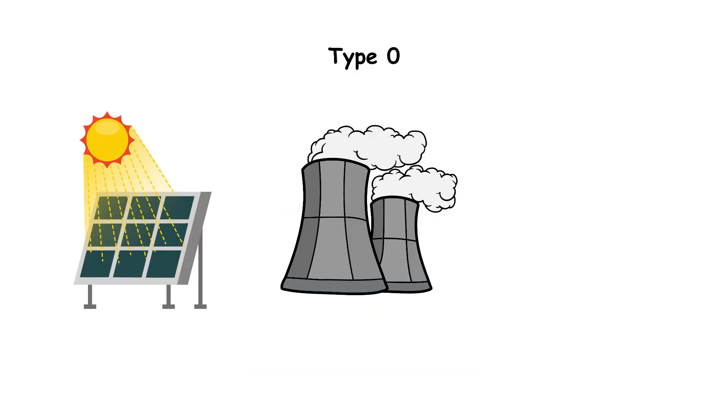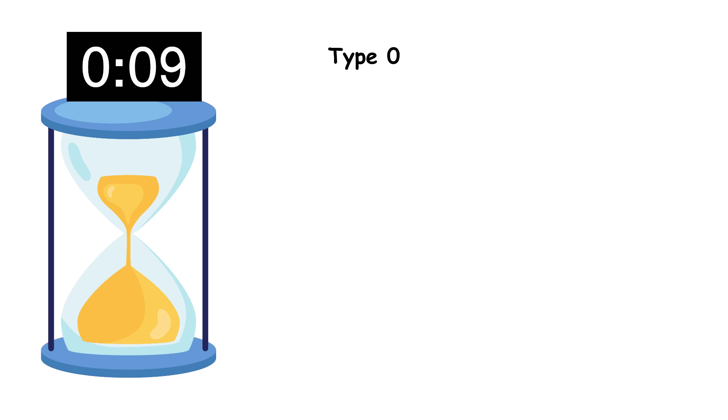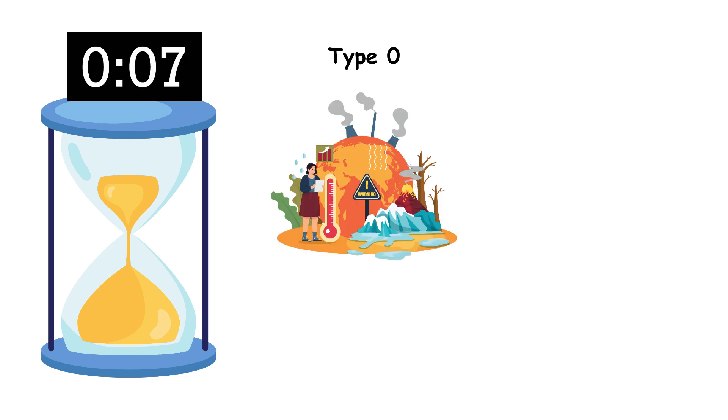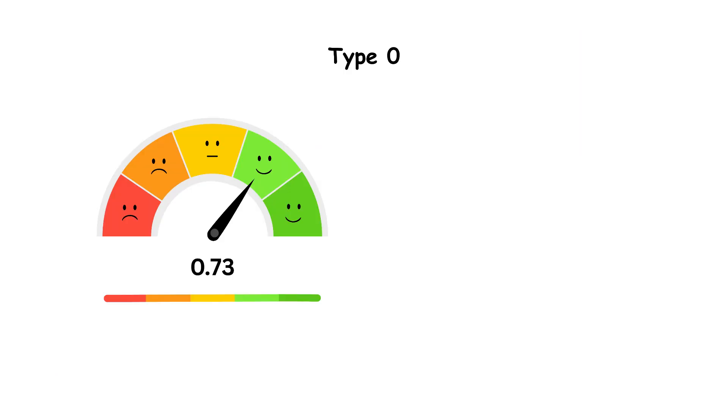Solar power, nuclear energy, and global communication are early steps toward advancement. The challenge? Time is short. Climate change, wars, or technological risks could prevent us from reaching the next stage. Scientists estimate we're currently at 0.73, with Type 1 possible in 100 to 200 years.